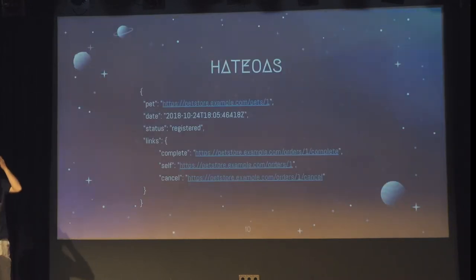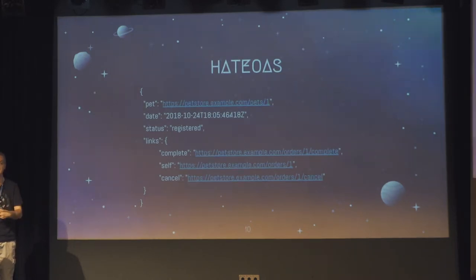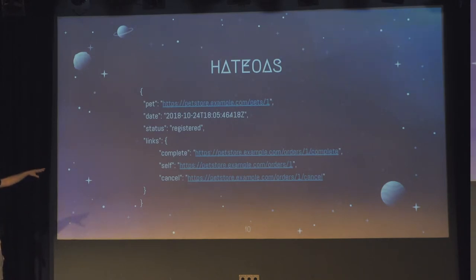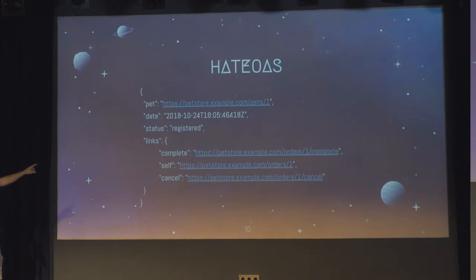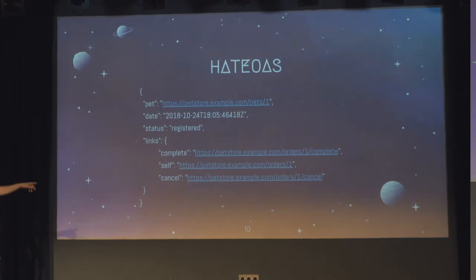What about HATEOAS? HATEOAS is a general term. In HTML terms, it's usually the links you have in a page that allow you to navigate. In an API, there are many ways to implement it, but usually you will have a list of links in some format. This is not standardized, but in our case, along with the representation you were asking for, you will have a links object. There is always a self relation — the self represents the unique way to identify that resource. So you can save it, and if you do a GET on that self, you will get the same instance every time.